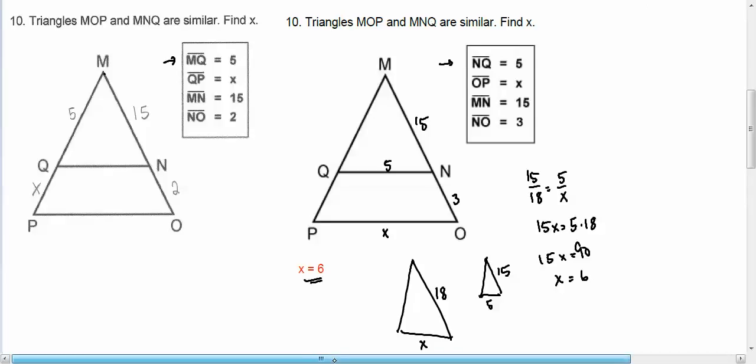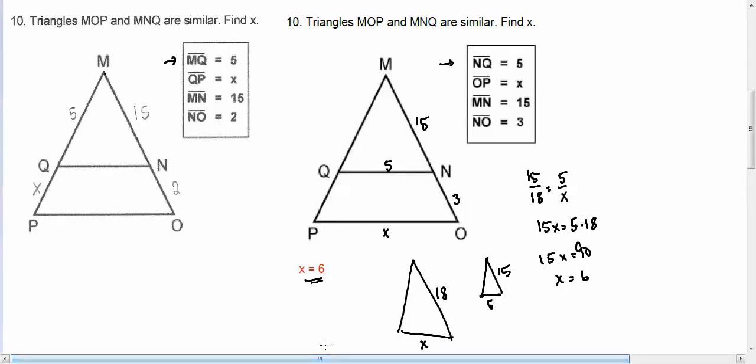Now what the students got is they didn't set up the similar triangles correctly. They tried doing more of a similar length ratios, and that doesn't really work.